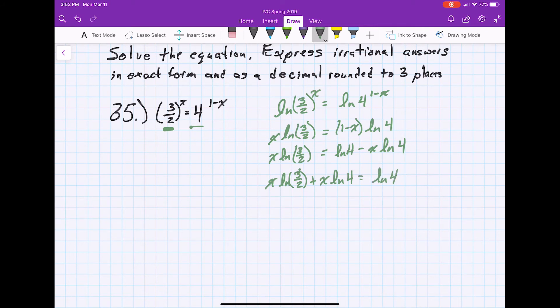And so now we can extract the x from these two terms. So we have x times the quantity ln 3 halves plus ln 4 is equal to ln 4.